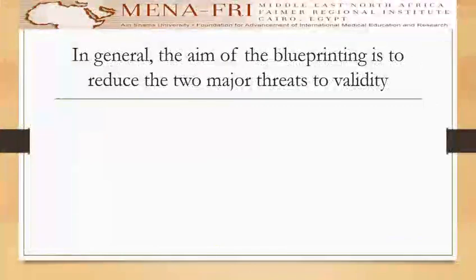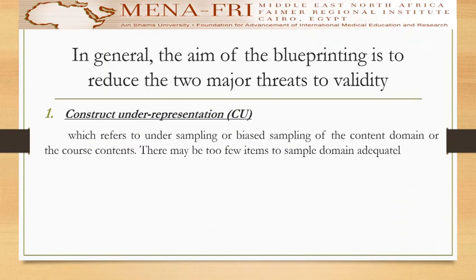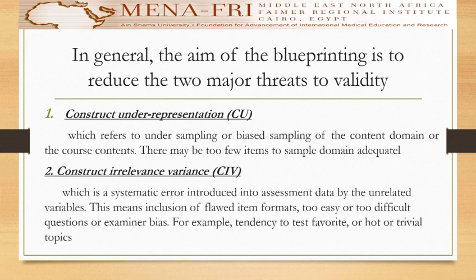In general, the aim of blueprinting is to reduce two major threats to validity. The first threat is construct under-representation, which refers to biased sampling of the content domain — there may be too few items to sample the domain adequately. The other main threat is construct-irrelevant variance, which is a systematic error introduced into assessment data by unrelated variables, meaning the inclusion of flawed item formats, too easy or too difficult questions, or examiner bias — for example, tendency to test favorite, hot, or trivial topics.